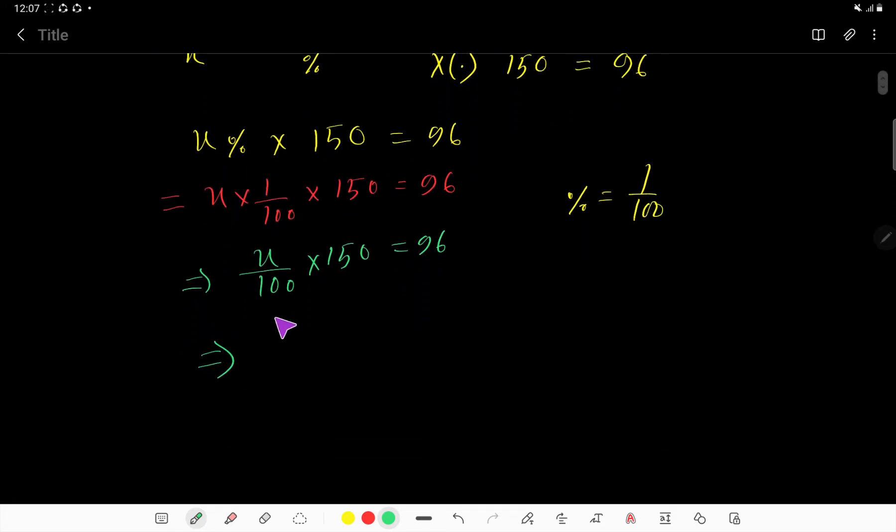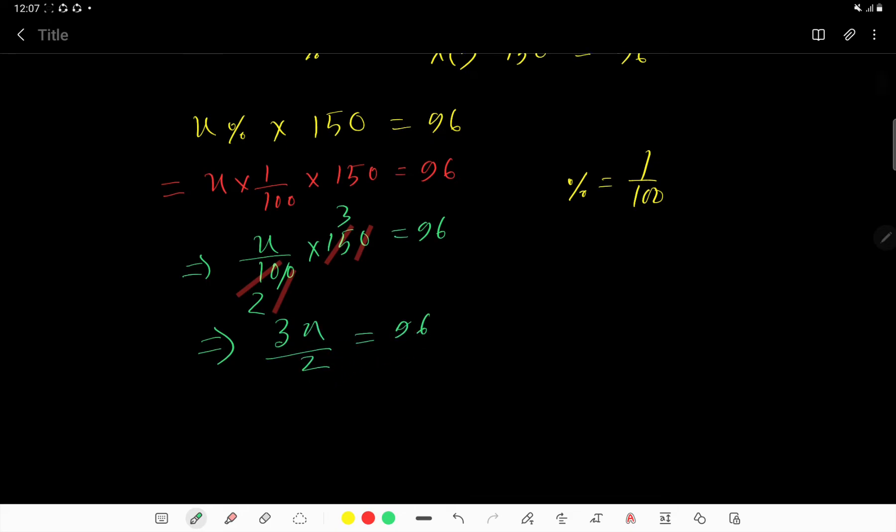So this 0 cancels. So if I divide this 10 by 5, then I will get 2. And if I divide this 15 by 5, then I will get 3. So we are getting here 3x divided by 2 equals 96, right?